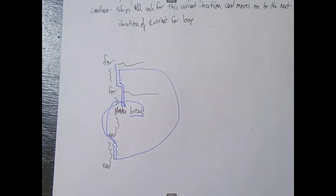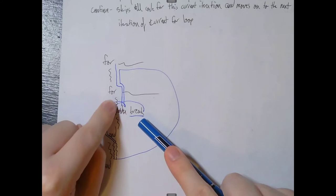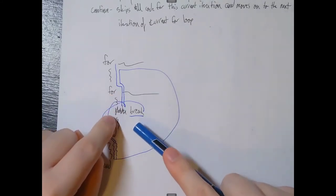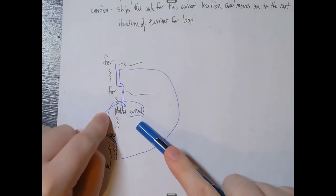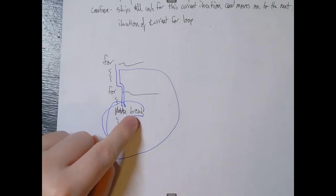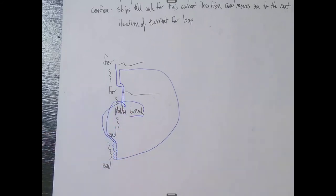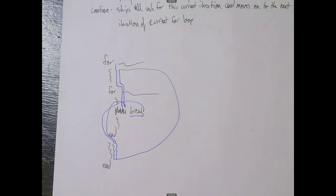You might wonder why we care about break if it just skips iterations — why even have the inner for loop? That's a good point, which is why break statements are usually nested inside if statements. Break is a good way of preventing things from going wrong. For example, if you're doing calculations inside a for loop and an if statement detects an invalid value, you can use break to completely get out of the for loop for the rest of that run.